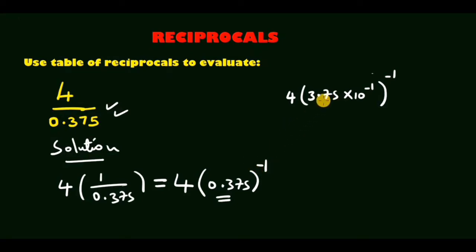If you look at 3.75, we can note that it is raised to power 1 and 10 is to power negative 1. Because they are separated by multiplication, these powers can multiply by the overall power negative 1. So negative 1 by 1 means we will have 4 into 3.75 raised to power negative 1, and that gives us 10 power 1.